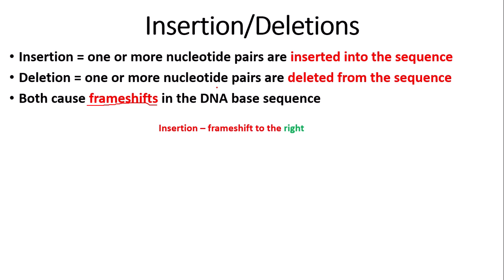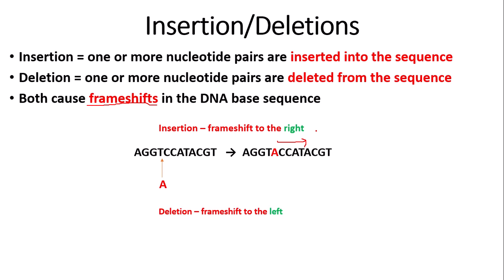In an insertion we have a frame shift to the right. As you can see, an adenine is being inserted here in between the thymine and the cytosine, causing the bases downstream of the mutation to move to the right, which will obviously alter the amino acid sequence quite significantly. In deletions there's a frame shift to the left — this cytosine here is being deleted, so there is a frame shift to the left as the bases downstream of the mutation move left, again changing the amino acid sequence.